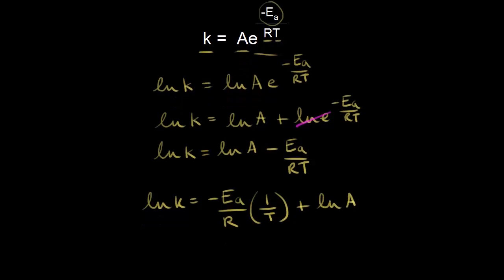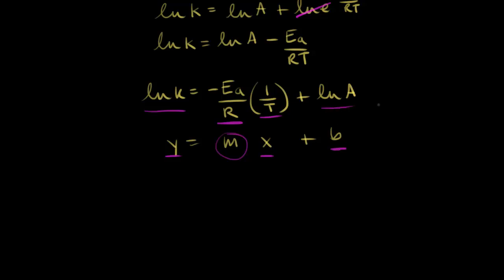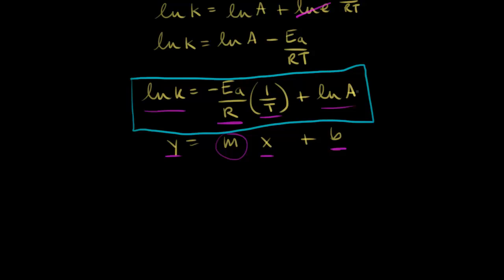The reason we write it this way is to see the form y equals mx plus b. If we graph the natural log of k on the y-axis and one over T on the x-axis, we get a straight line. The slope of that line is equal to negative Ea over R, so we can find the activation energy from the slope. The y-intercept is equal to the natural log of A, so we can find the frequency factor as well. This is another form of the Arrhenius equation.